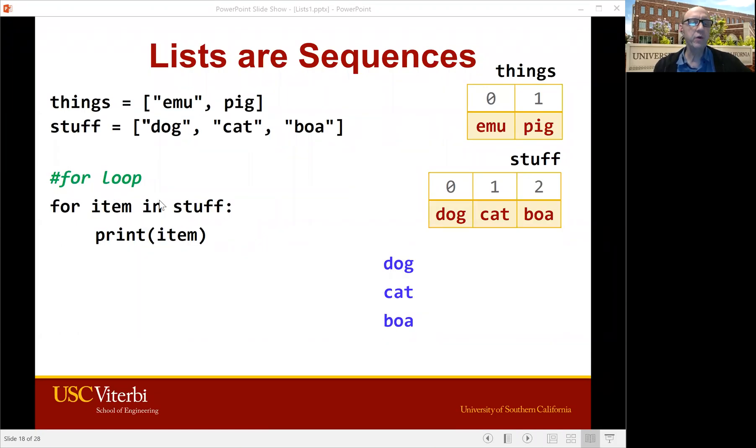And we can also use the word in in a for loop. So for item in stuff, item is now a variable. And it is assigned to the first item of stuff and we print that. And then it loops around and item becomes the second, the number one item in stuff, which is cat, and it prints that. And then we loop around again and item becomes the third, the number two item, and we print that boa. So this makes it really easy to go through a list.